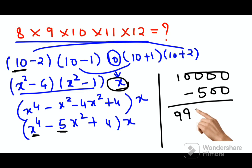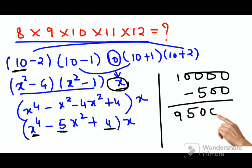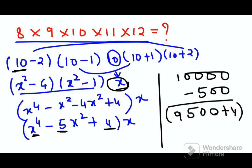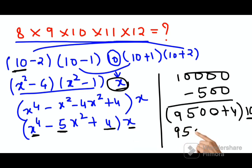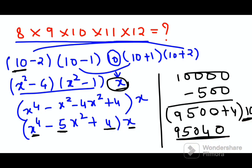We have 9,500 — sorry, not 9,000, that was 9,500 — and then there is a plus 4, so we add 4 to get 9,504. Don't forget everything is still multiplied by x, which is 10, so the final answer is 95,040.